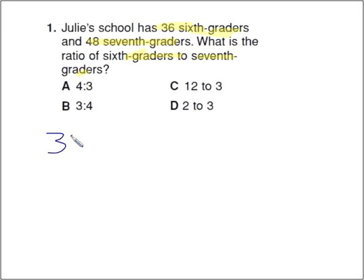So let's write this down. We have a 36 to 48 ratio. Now we want to write this in its simplest terms. So just like with simplifying fractions, we need to find a common factor between 36 and 48, most probably the greatest common factor.